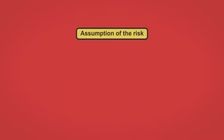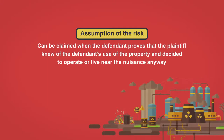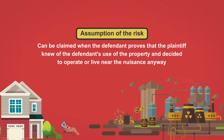A similar defense is assumption of the risk. Assumption of the risk can be claimed when the defendant proves that the plaintiff knew of the defendant's use of the property and decided to operate or live near the nuisance anyway.